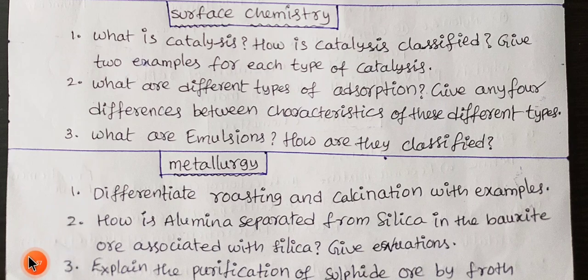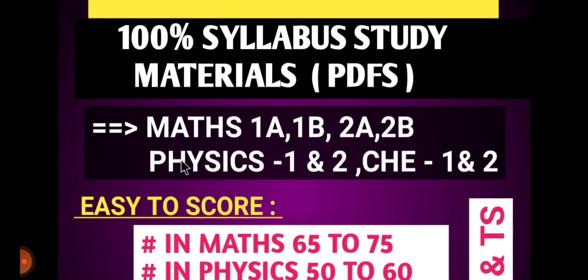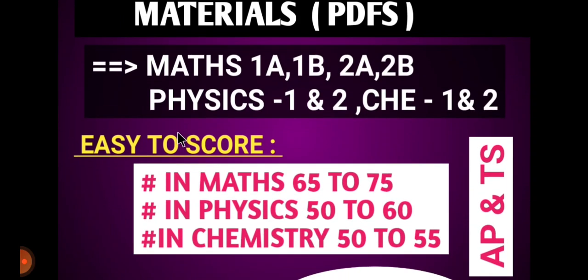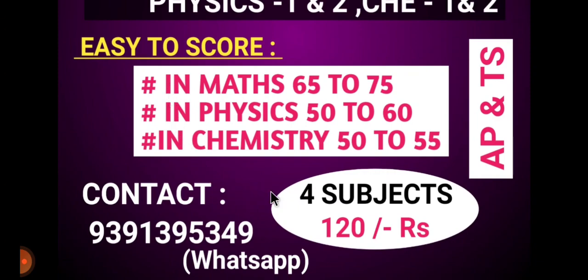Next chapter. Students, enter first year and second year — 100% syllabus study materials. We can prepare PDFs. Maths is easy, chemistry is easy. Here you have 4 subjects for 120 rupees. If you have contact, respond to your WhatsApp number and come to my video.